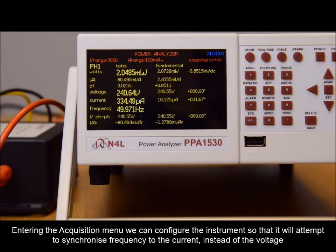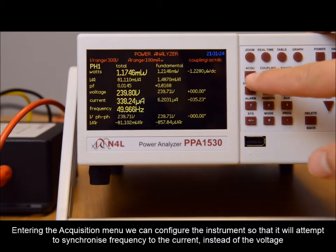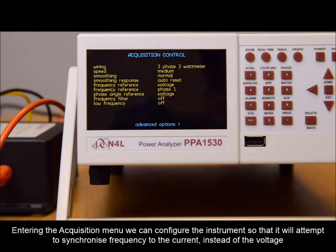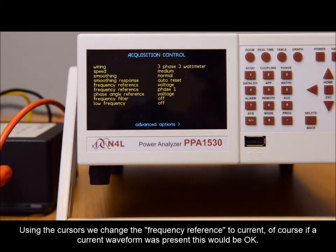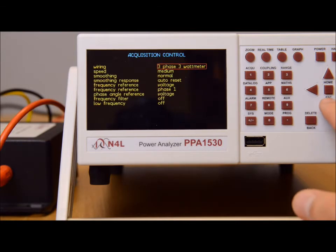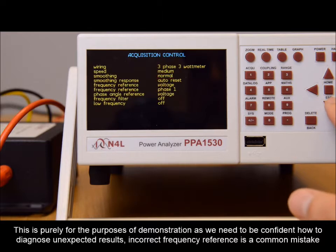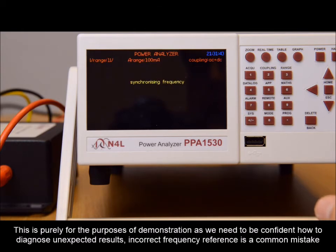Entering the acquisition menu, we can configure the instrument so that it will attempt to synchronize frequency to the current instead of the voltage. Using the cursors, we change the frequency reference to current. Of course, if a current waveform were present, this would be okay. This is purely for the purposes of demonstration, as we need to be confident how to diagnose unexpected results. Incorrect frequency reference is a common mistake.